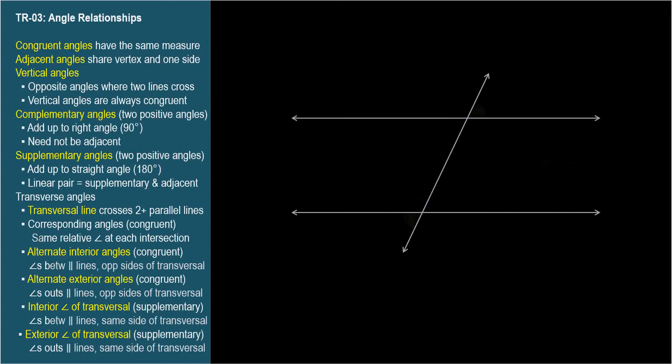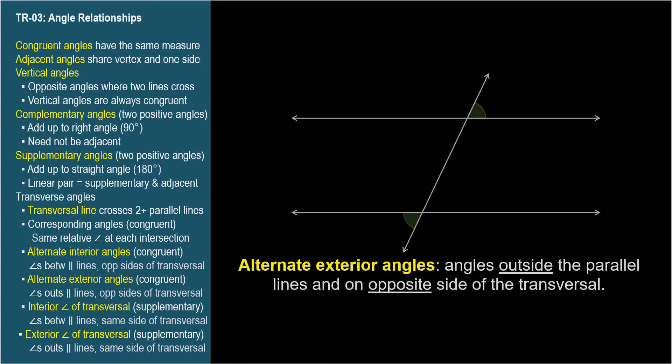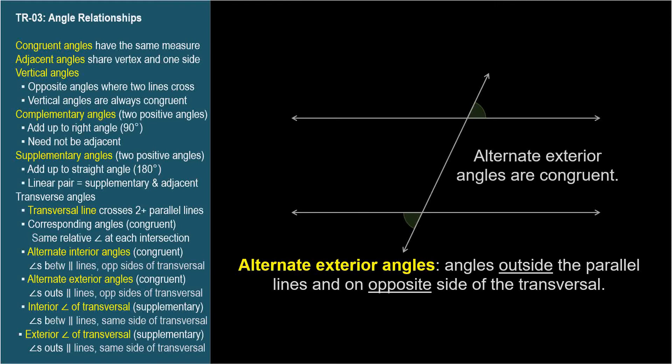Alternate exterior angles are the pairs of angles on the outside of the parallel lines and on opposite sides of the transversal. Alternate exterior angles are congruent.